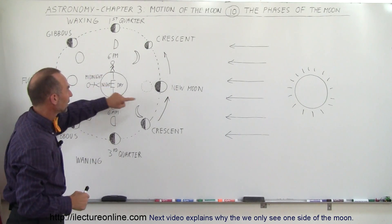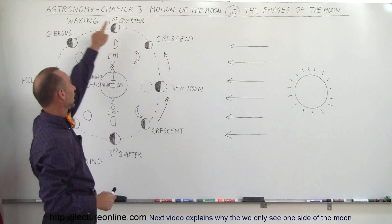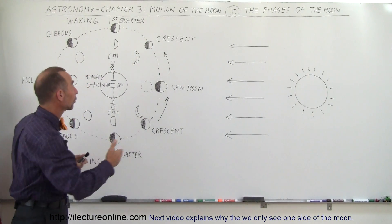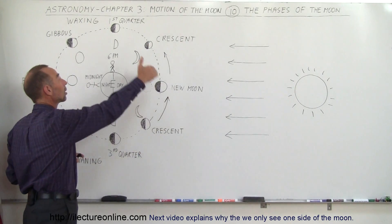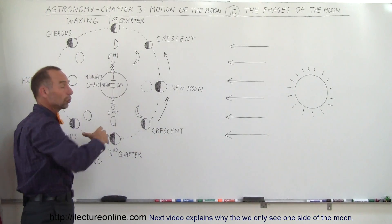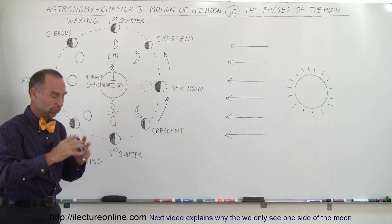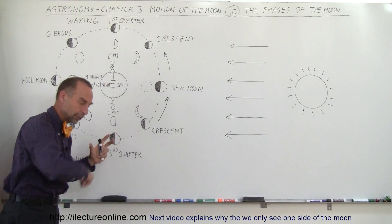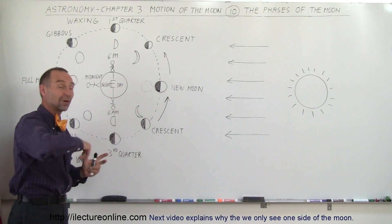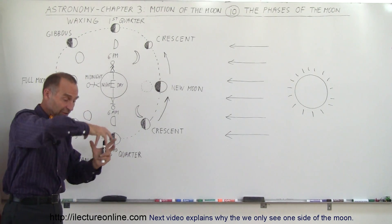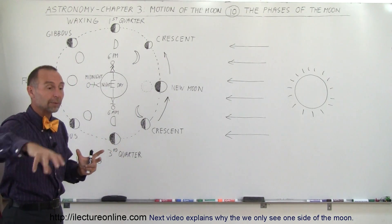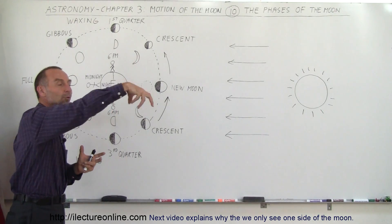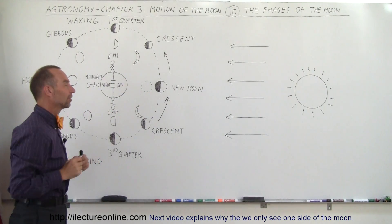Here's the Earth and there's the Moon going around the Earth. The Moon goes around the Earth in a counterclockwise direction looking from the North. So when you look at the North Pole, the Moon will go around the Earth in a counterclockwise direction — the same direction as the Earth going around the Sun, and the Earth rotating on its axis, and the Moon rotating on its axis.